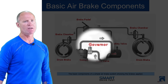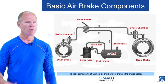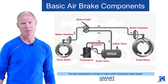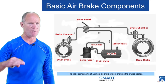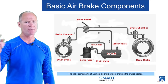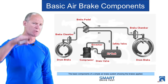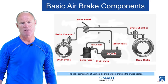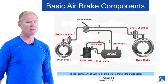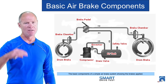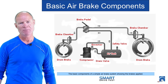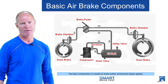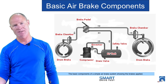The governor controls the compressor. Think of the governor on a compressor like a thermostat on a furnace. The temperature in the house gets down to a minimum — the thermostat turns the furnace on. The temperature goes back up to a maximum — the thermostat turns the furnace off. A governor does exactly the same thing. The system goes down to a minimum air pressure, and it puts the compressor back into the load phase and loads the system.